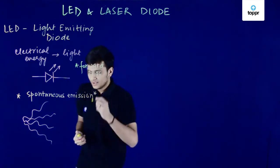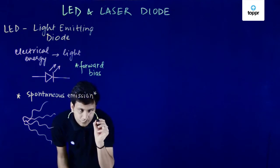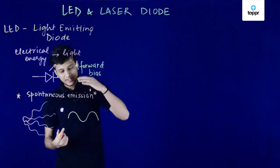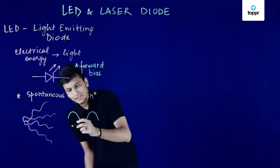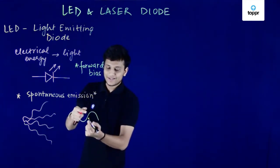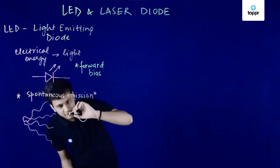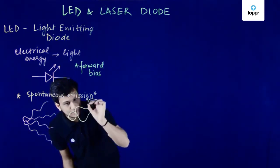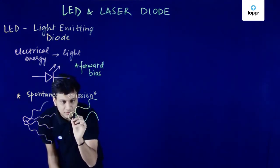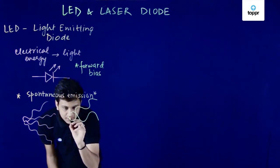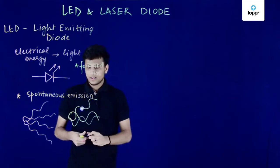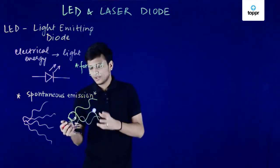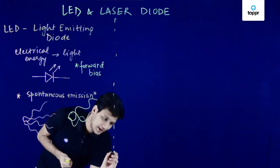Incoherent means that the light waves are out of phase. For example, if one light wave starts from a peak, it is not necessary that another light wave also starts from a peak — it might start from a valley, or from the topmost position. So all these waves are out of phase because they don't share the same starting point in their cycle. This is what incoherent light means, and this is the kind of light that an LED produces.